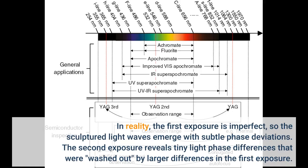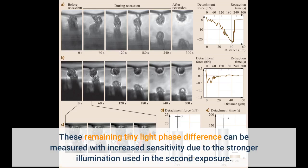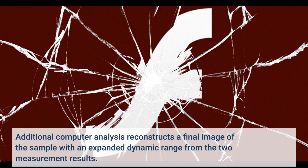In reality, the first exposure is imperfect, so the sculpted light waves emerge with subtle phase deviations. The second exposure reveals tiny light phase differences that were washed out by larger differences in the first exposure. These remaining tiny light phase differences can be measured with increased sensitivity due to the stronger illumination used in the second exposure. Additional computer analysis then reconstructs a final image of the sample with an expanded dynamic range from the two measurement results.